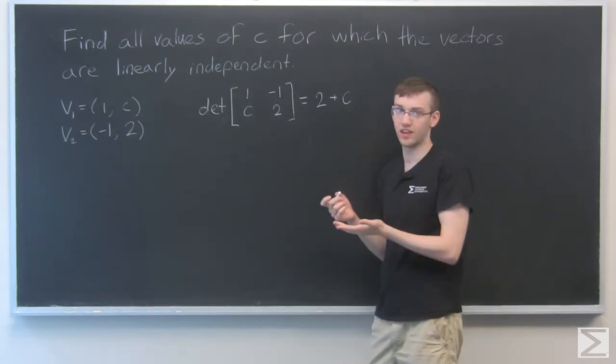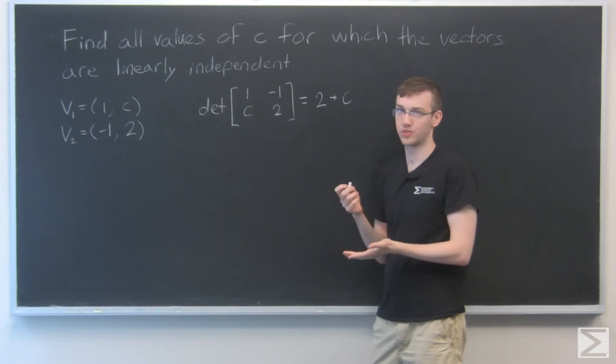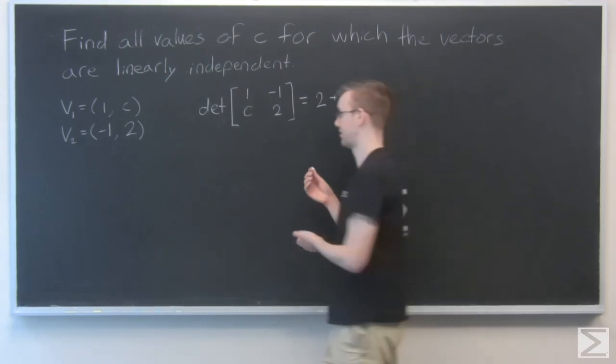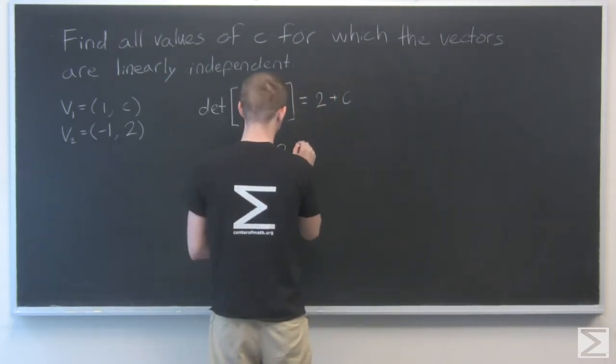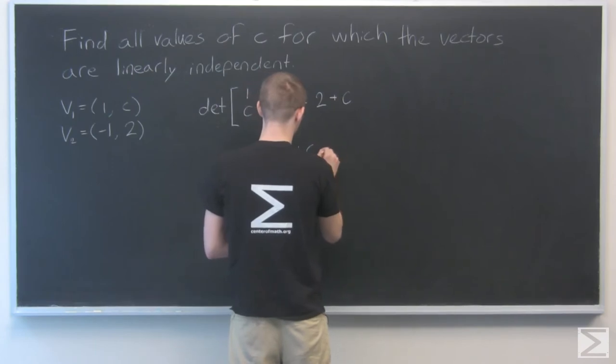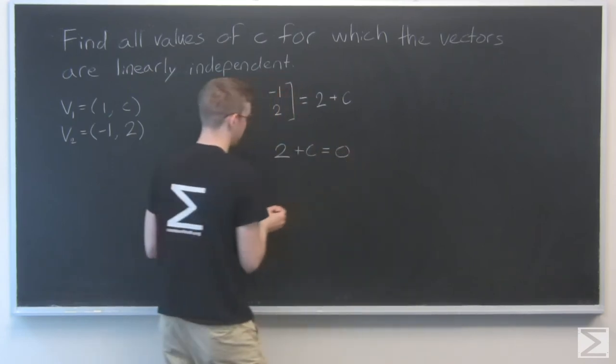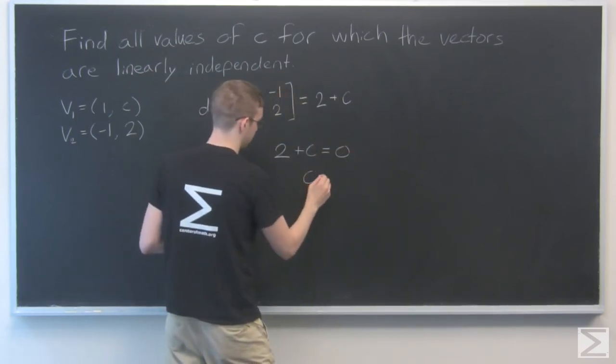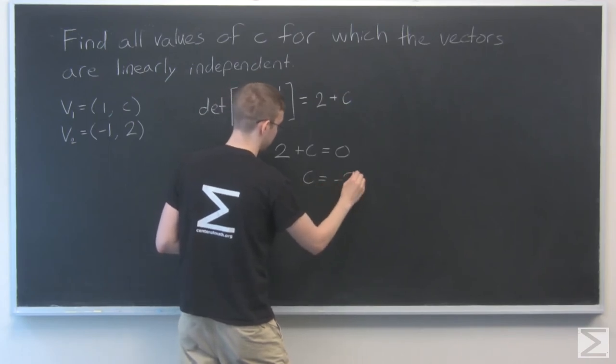Now we want to look at values for which the determinant equals 0. So I'll set up that relation: 2 plus C equals 0. So the values of C we want to look at are when C equals minus 2.